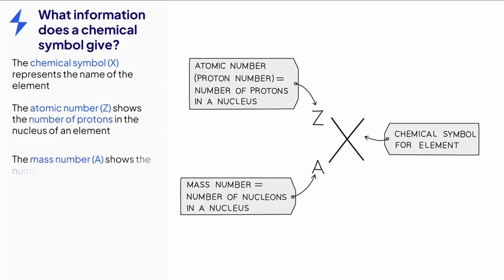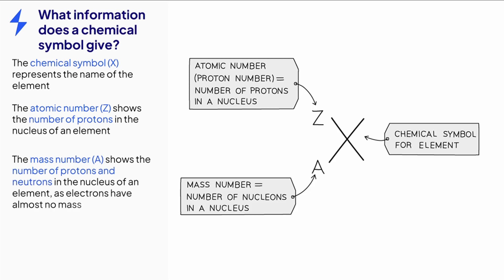The letter A represents the mass number of the element. This gives the number of protons and neutrons in the nucleus of an element. Electrons do not contribute to the mass number because they have a negligible mass.